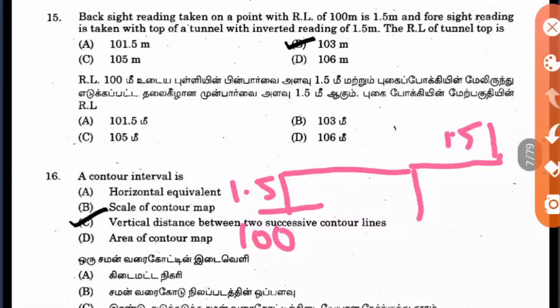They ask for the RL of the top of the tunnel. To find it, you add 100 plus 1.5 plus 1.5, so all three are added together giving 103 meters.